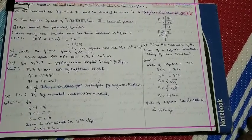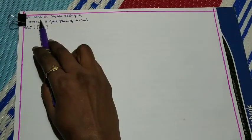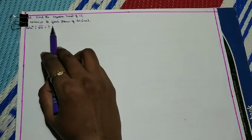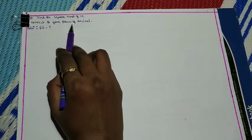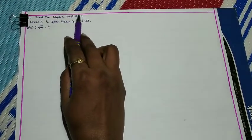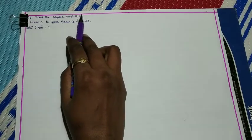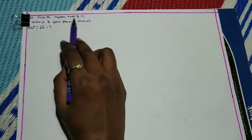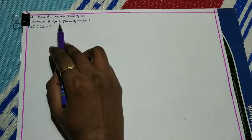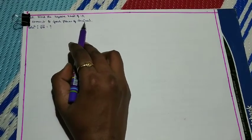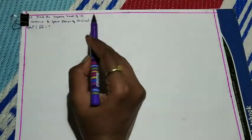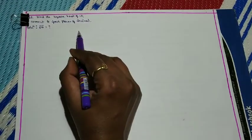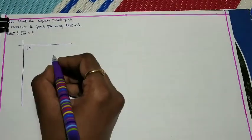Now let me move to the second brain teaser question: Find the square root of 10 correct to 4 decimal places. Here 10 is a non-perfect square. We need to find it to 5 decimal places and then round off to 4.